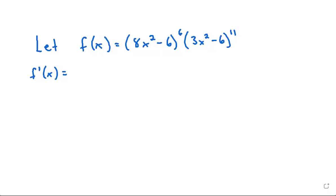Let f(x) equal 8x squared minus 6, all to the power of 6, times 3x squared minus 6, all to the power of 11, and we're trying to find the derivative.